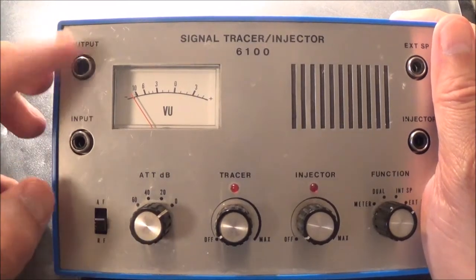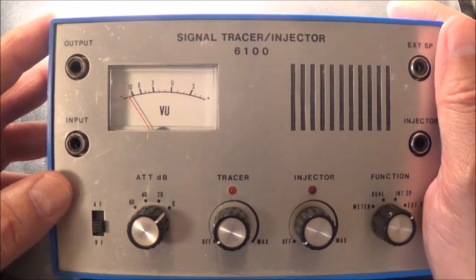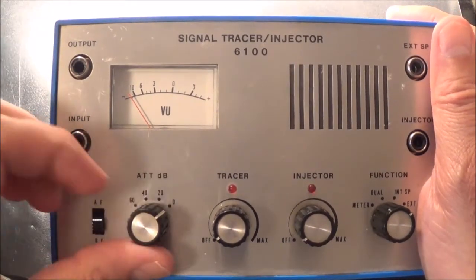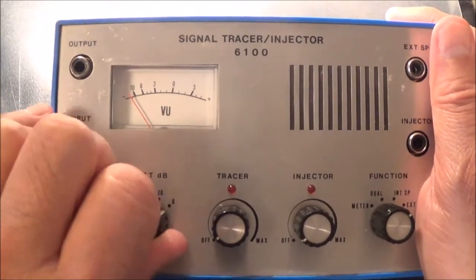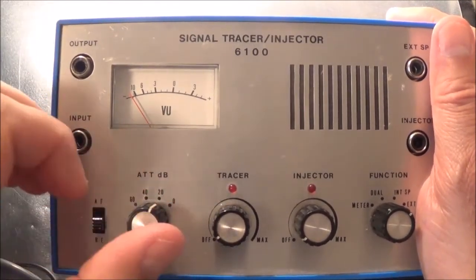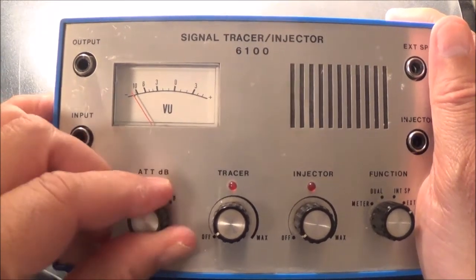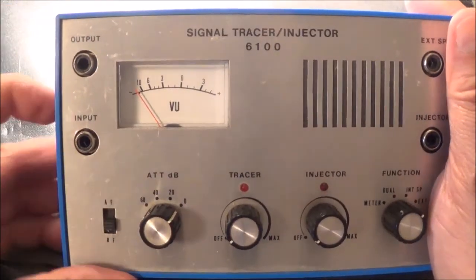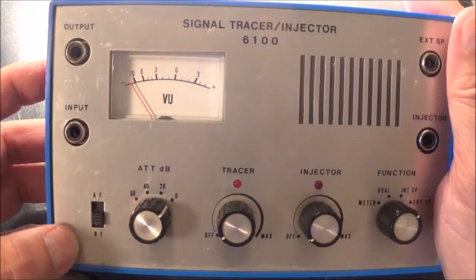You could probably hook it up to an oscilloscope if the signal is too low. You have an attenuator here. It goes all the way down to minus 60 dB. Sometimes if the signal is too strong, you can just turn this down easily like that.